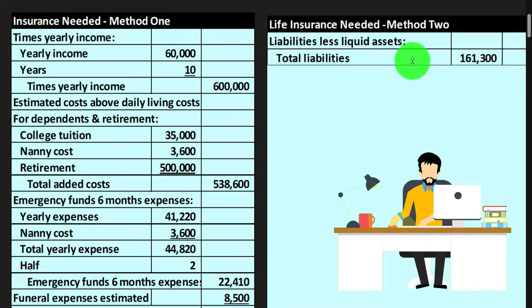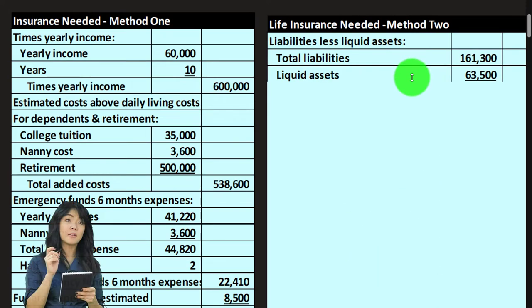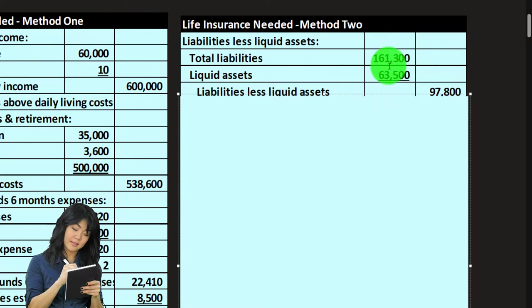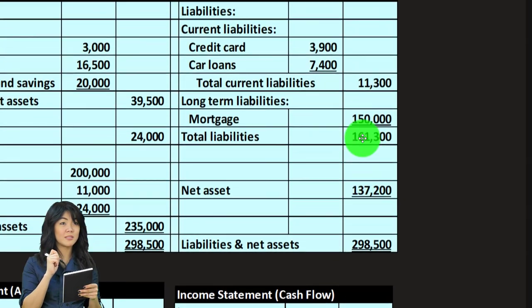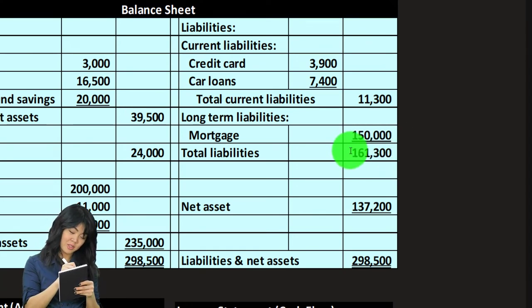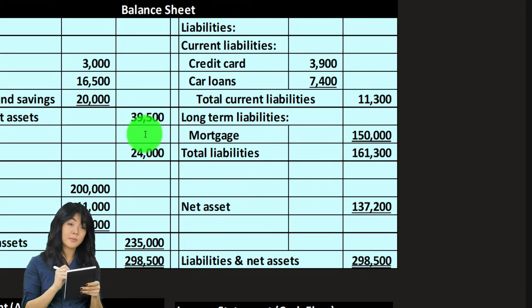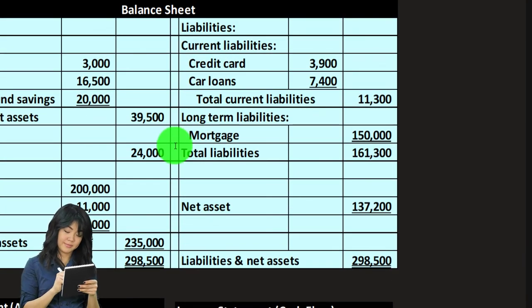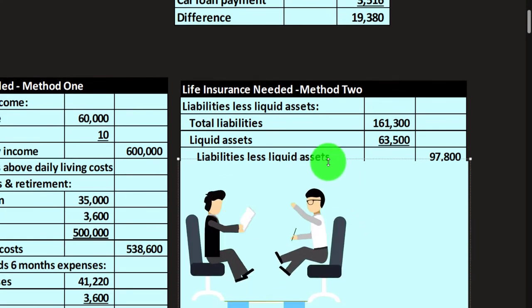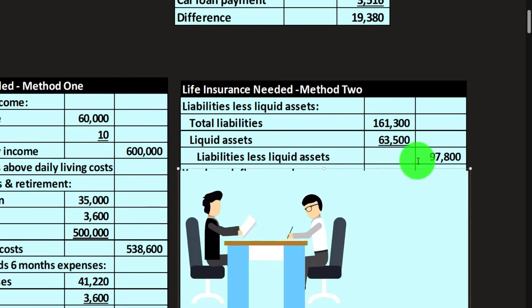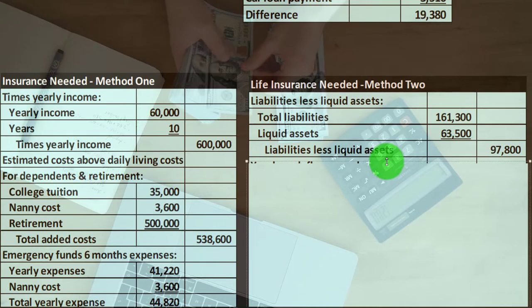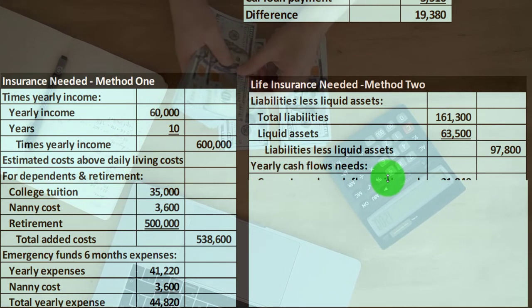Another method: start by saying I'd like to pay off the liabilities — $161,300 — at the point of death. I currently have liquid assets of $63,500 ($39,500 plus $24,000 assuming they have access at the point of death). So just to wipe out the liabilities, I would need $97,800. Then I consider the yearly cash flow needs after that point — not including the mortgage payments since we paid it off — using the $21,840 figure.